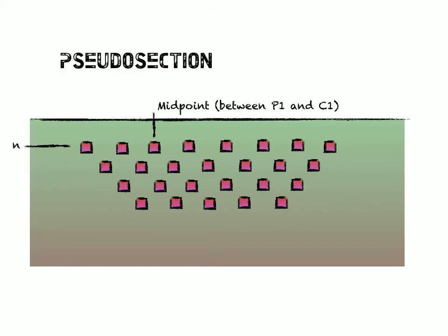So for each of these resistance measurements I've made thus far, I have a midpoint, so the point sort of in the middle of the path that the resistance was measured on, and then an n. This is the electrode spacing number.